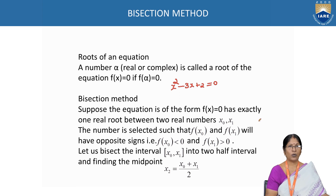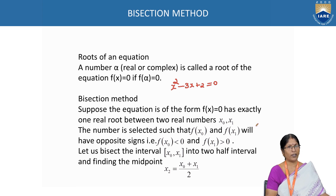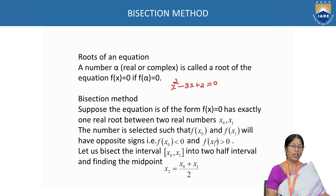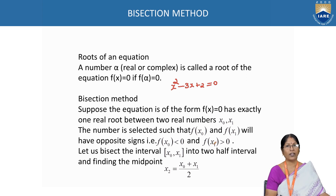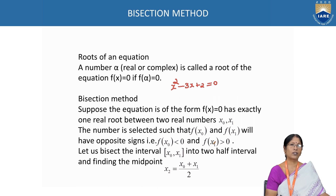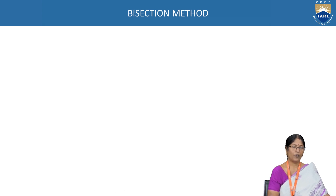Suppose the equation f of x = 0 has one real root between two real numbers x₀ and x₁. These x₀ and x₁ are selected in such a way that f of x₀ and f of x₁ will have opposite sign values. That is, f of x₀ is less than 0 (negative) and f of x₁ is greater than 0 (positive). To get x₂, we bisect the closed interval [x₀, x₁] into two sub-intervals and find the midpoint: x₂ = (x₀ + x₁) / 2.